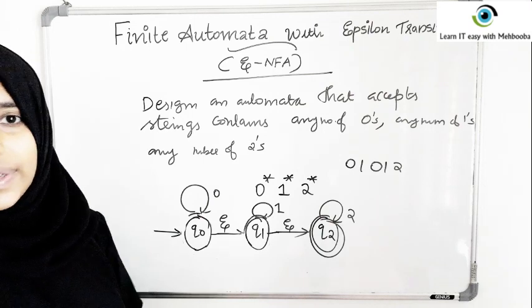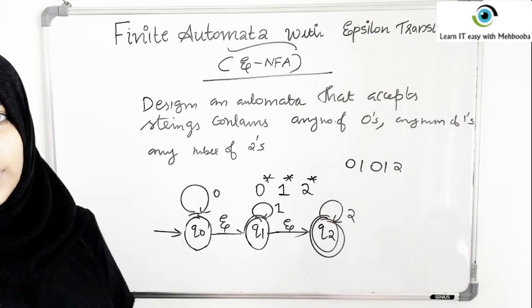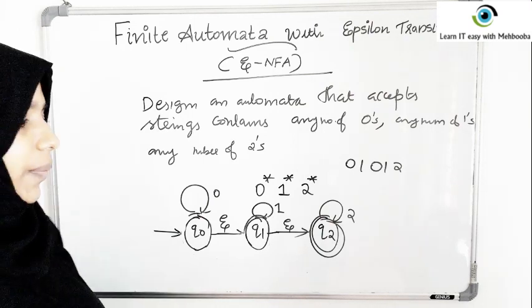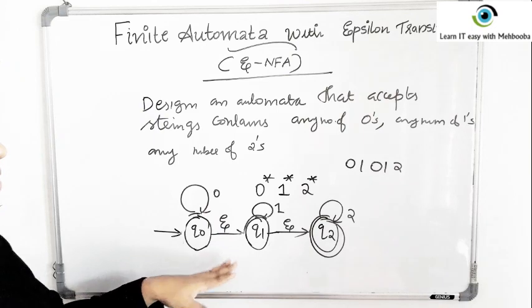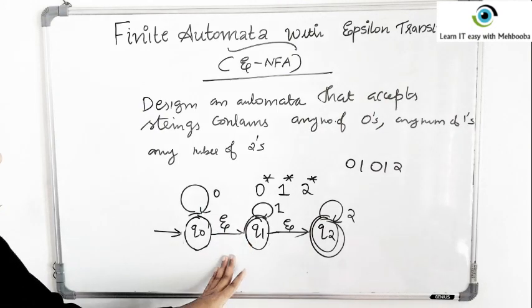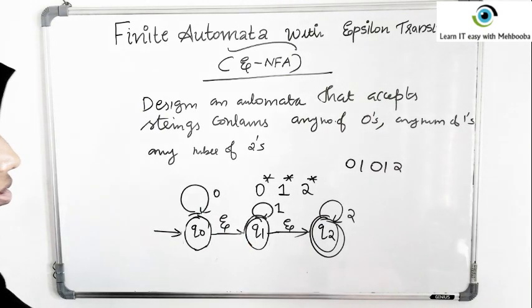Don't worry — we can always convert an epsilon NFA into an NFA or a DFA. This is one example. We will see more examples. Next, we will draw an epsilon NFA for a floating point number.